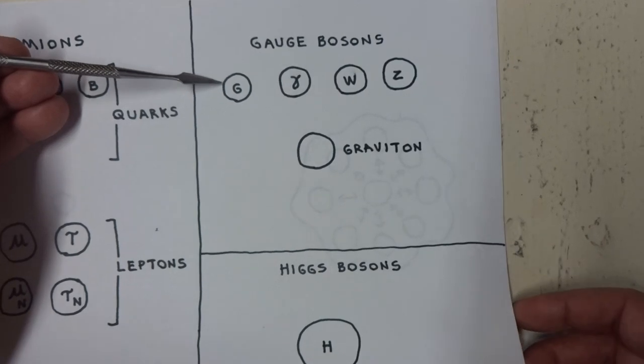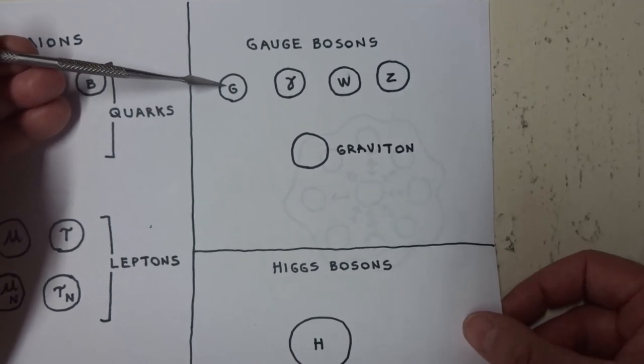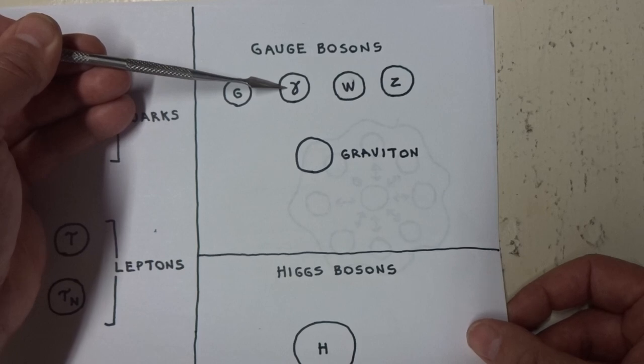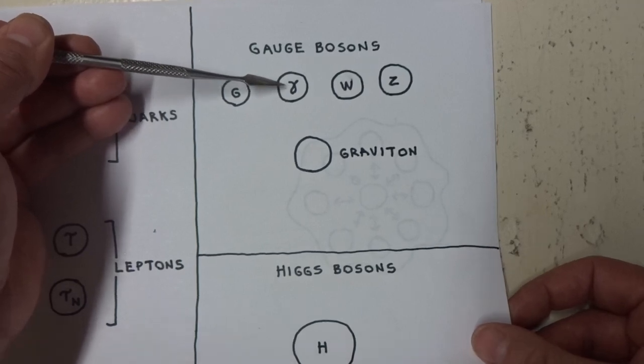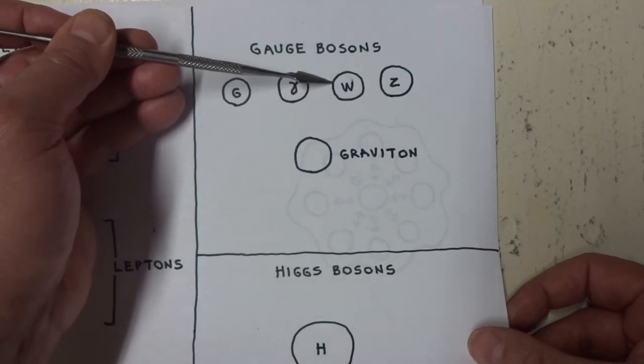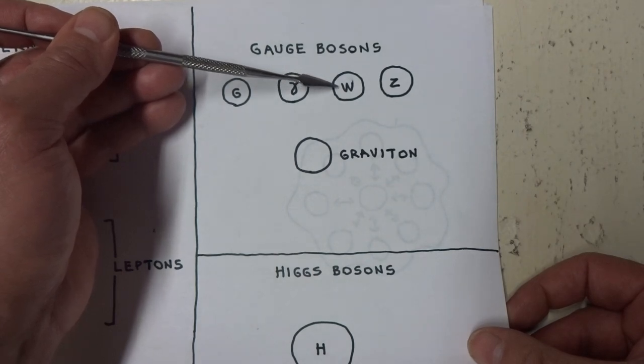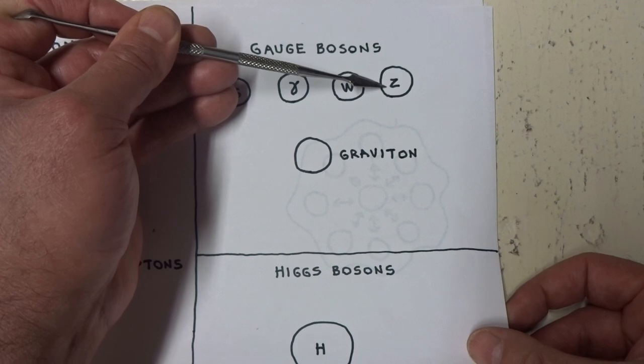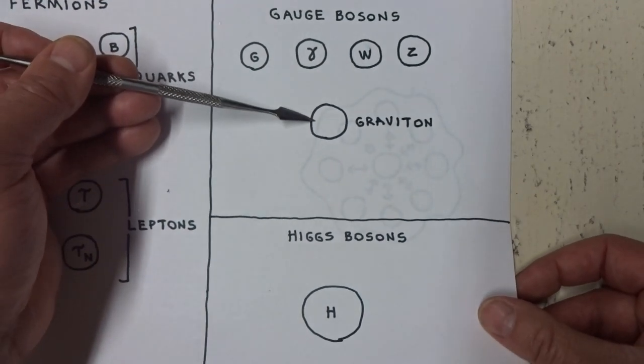Gauge bosons consists of the gluons, the photon, the photons of light in the electromagnetic spectrum, the weak nuclear force particles called the W and the Z particles, and the theoretical graviton.